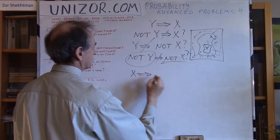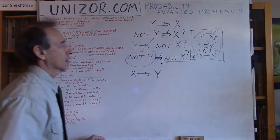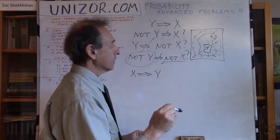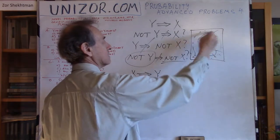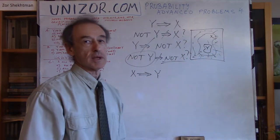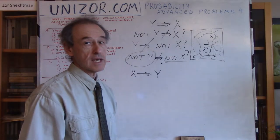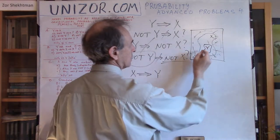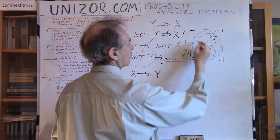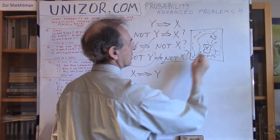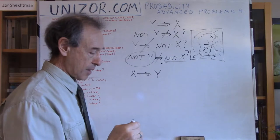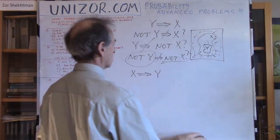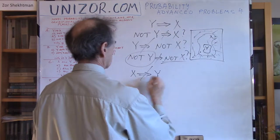From X follows Y — is this a true statement? If my point falls inside X, does it mean it automatically falls inside Y? Obviously not, because the point can fall inside X but outside Y. So X happens and Y does not happen. This is not the correct implication. False.